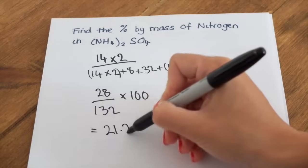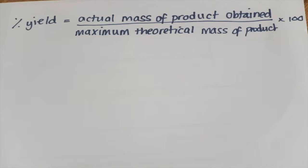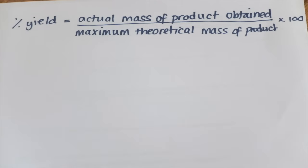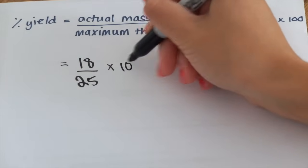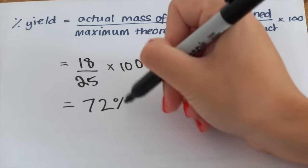Next we're going to look at percentage yield. Particularly in reversible reactions where reactions go back and forth, you find that you don't get 100% of the amount you expect. That's because some reactions don't go to completion, reactants can behave in strange ways so you don't get all the products you want, and sometimes you lose some products when trying to remove them from the reaction mixture. Percentage yield = (mass of product obtained ÷ maximum theoretical mass of product) × 100. For example, if a reaction produces 18 grams of a compound but the maximum theoretical yield was 25 grams: 18 ÷ 25 × 100 = 72%.